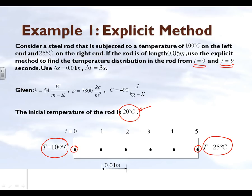We are taking this rod, which is 0.05 meters in length, and we are using a delta x — the length between two nodes — of 0.01 meters, which implies we will have five segments and a total of six nodes: 0, 1, 2, 3, 4, and 5.